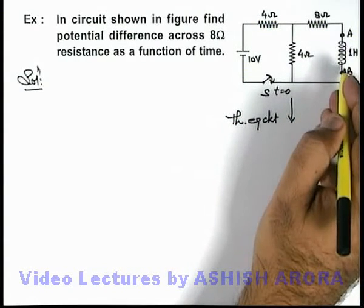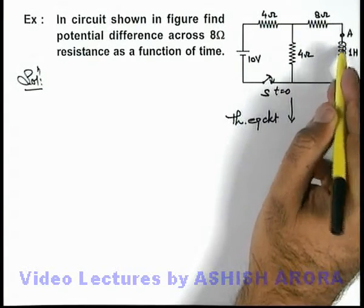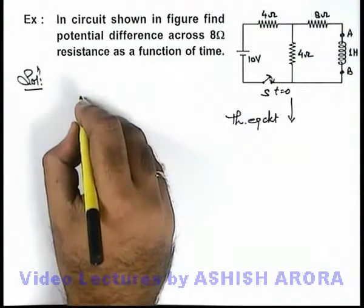Here you can see if A and B terminals are opened, and we calculate the internal resistance of the circuit you can directly see,